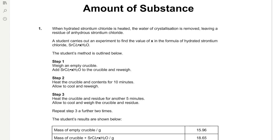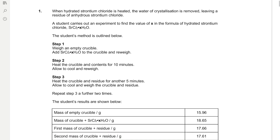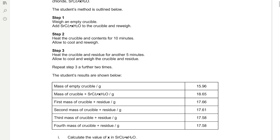When hydrated strontium chloride is heated, the water of crystallization is removed, leaving a residue of anhydrous strontium chloride. A student carries out an experiment to find the value of X in the formula of hydrated strontium chloride, SrCl₂·XH₂O. The student's method: Step 1 — weigh an empty crucible, then add the hydrated strontium chloride and re-weigh. Step 2 — heat the crucible and contents for 10 minutes, allow to cool, and re-weigh. Step 3 — heat the crucible and residue for another 5 minutes, allow to cool, and weigh. Repeat Step 3 a further 2 times. The student's results are shown below.